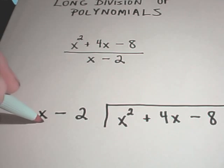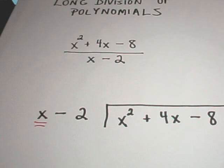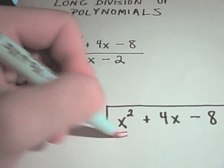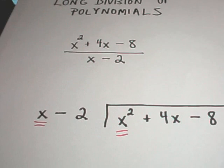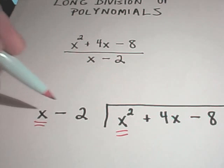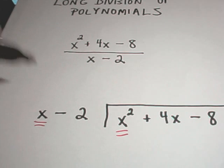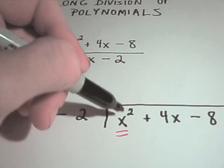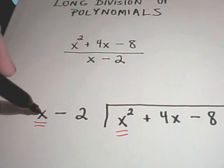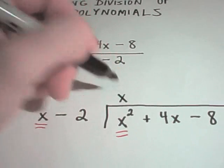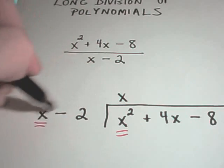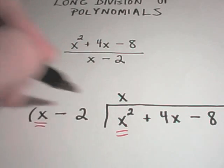So all you really do is you focus in on the first thing out front here, the x, and you focus in on the first thing underneath. And I think, well, x times what is going to give me x squared? Well, x times x is going to give me x squared.